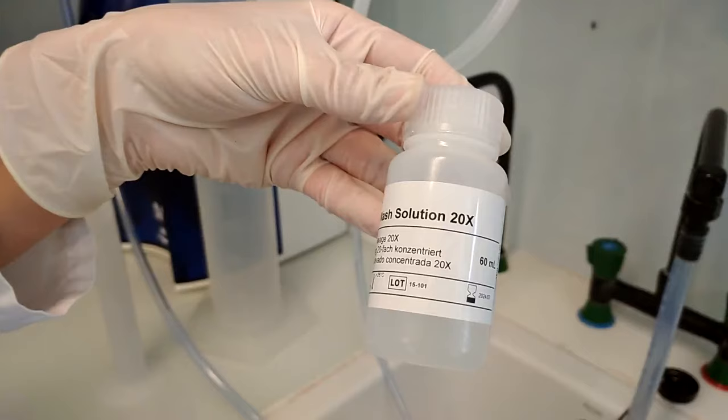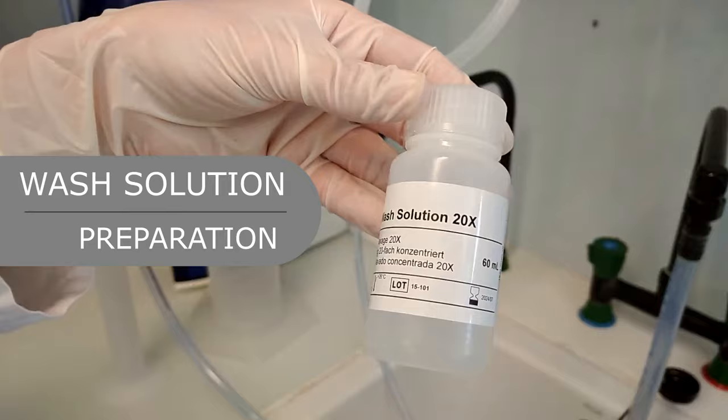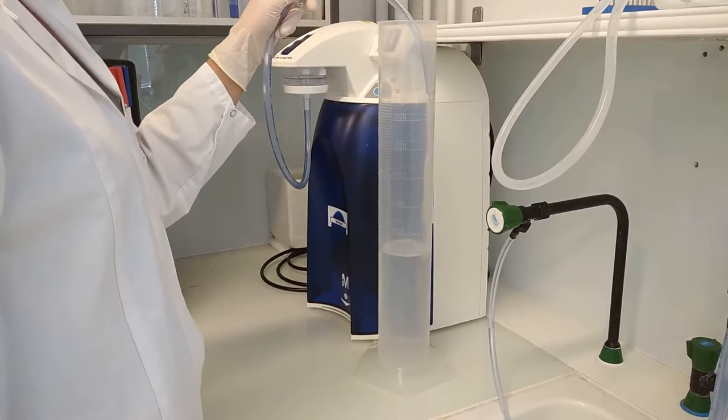Wash solution preparation: Mix thoroughly to ensure that the wash concentrate is completely solubilized. Prepare the wash solution by diluting the wash concentrate 1 to 20 in distilled or deionized water.